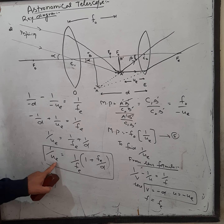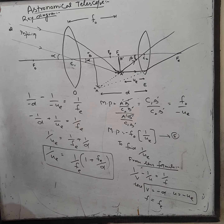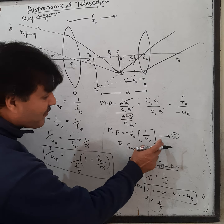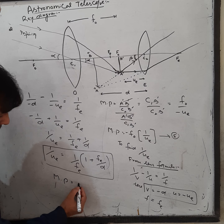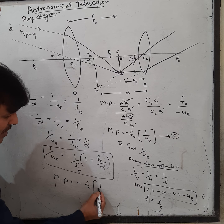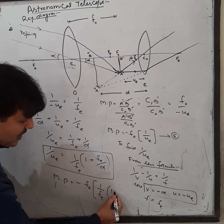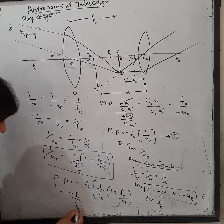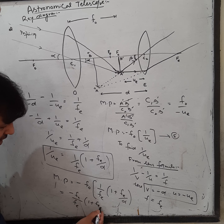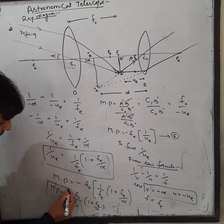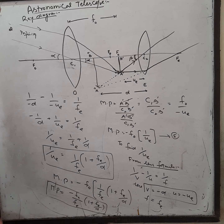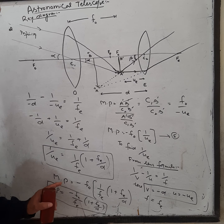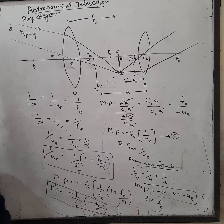Substituting the value of 1/u_e into equation 5: Magnifying power M = -f_o × (1/f_e)(1 + f_e/d) = -(f_o/f_e)(1 + f_e/d). This is the required expression for the magnifying power of an astronomical telescope. Yaad rakhna beta — yeh bahut important question hai. Thank you.